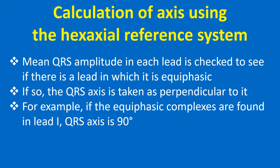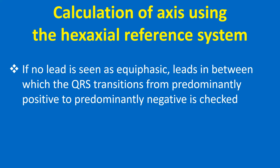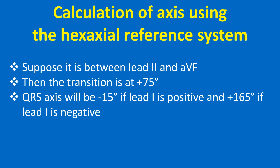For example, if equiphasic complexes are found in lead 1, the QRS axis is 90 degrees — plus 90 degrees if AVF is positive, and minus 90 degrees if AVF is negative. In this case, AVF will show the longest QRS complex as the QRS axis is along this lead. If no lead is seen as equiphasic, the leads between which the QRS transitions from predominantly positive to predominantly negative are checked. Suppose it is between lead 2 and AVF; then the transition is at plus 75 degrees. The QRS axis will be minus 15 degrees if lead 1 is positive, and plus 165 degrees if lead 1 is negative.